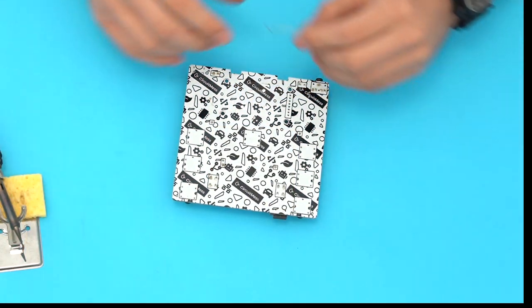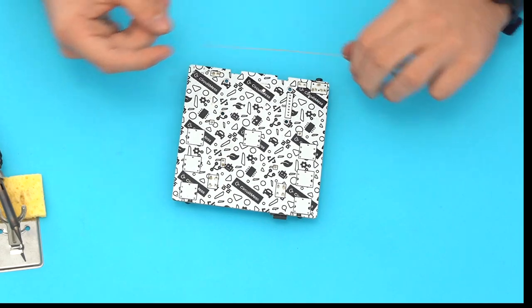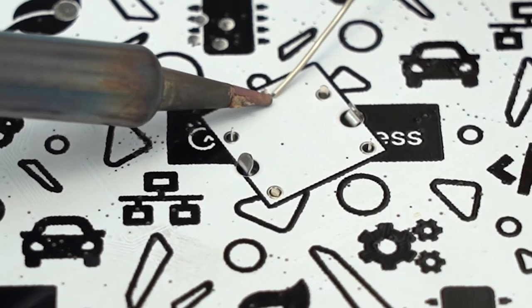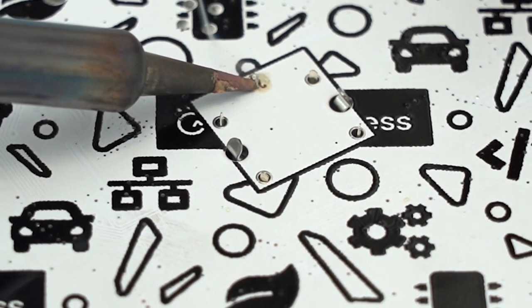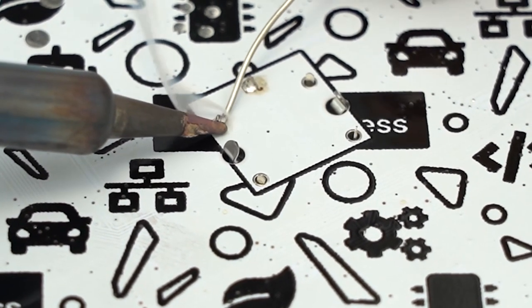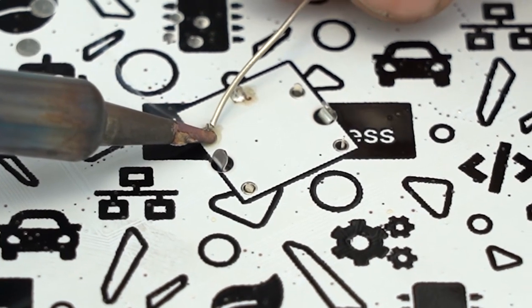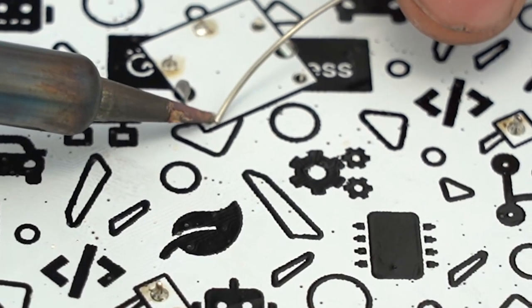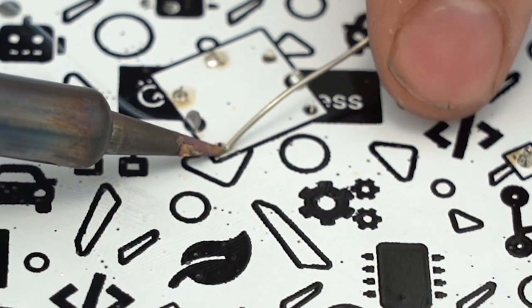After the soldering iron has heated up, place it on the pin so that it's touching both the pin and the little plated area on the circuit board. Next add some solder, not too little but not too much. The solder should melt evenly around the pin. After that you can move away the soldering iron and repeat the process for the next pin.